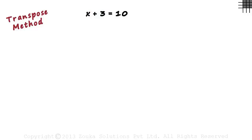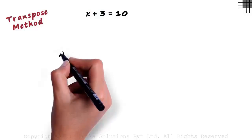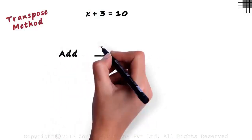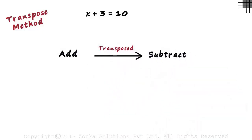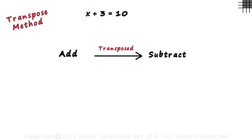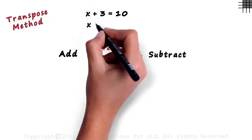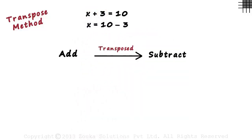Here's the first concept: whenever a term is added on one side, we can transpose it to the other side by subtracting it. In this equation, 3 is added on the left hand side. So when we transpose it to the right hand side, we subtract 3. We can write the equation as x equals 10 minus 3. So this plus 3 which was on the left hand side became minus 3 when transposed to the right hand side.